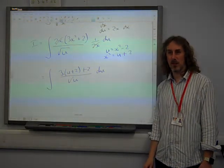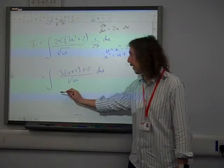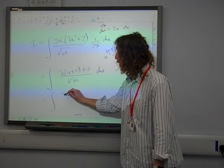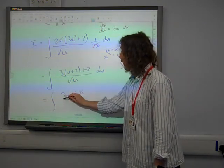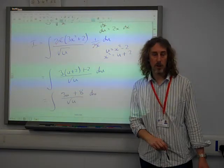Which again, really doesn't look very nice, does it? But let's keep working on it. The top line, again there were some little numerical errors creeping in from people here. This is 3u plus 6 plus 2, so that's plus 8. 3u plus 8 over root u.